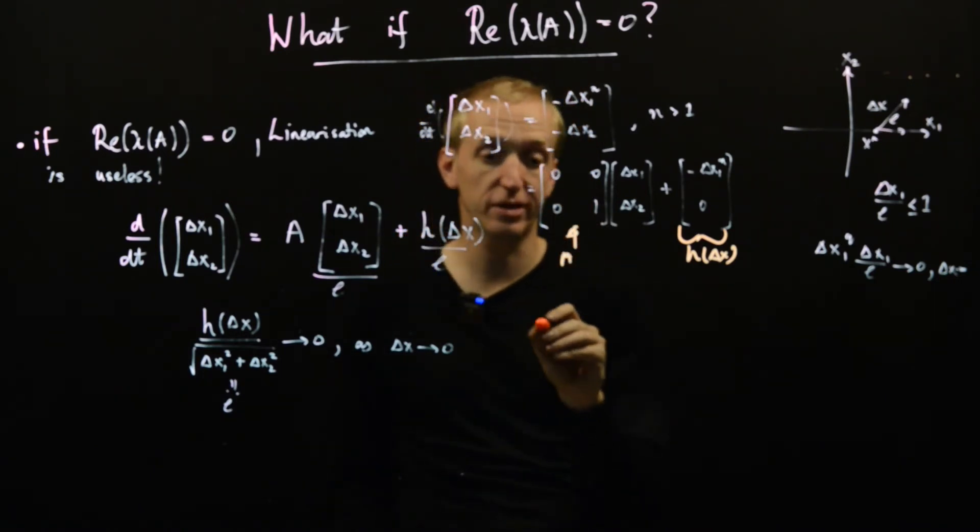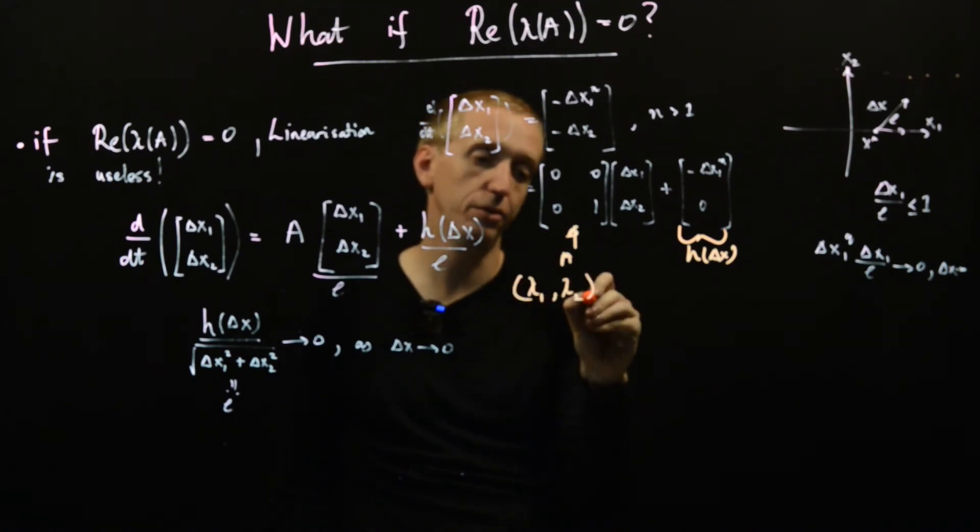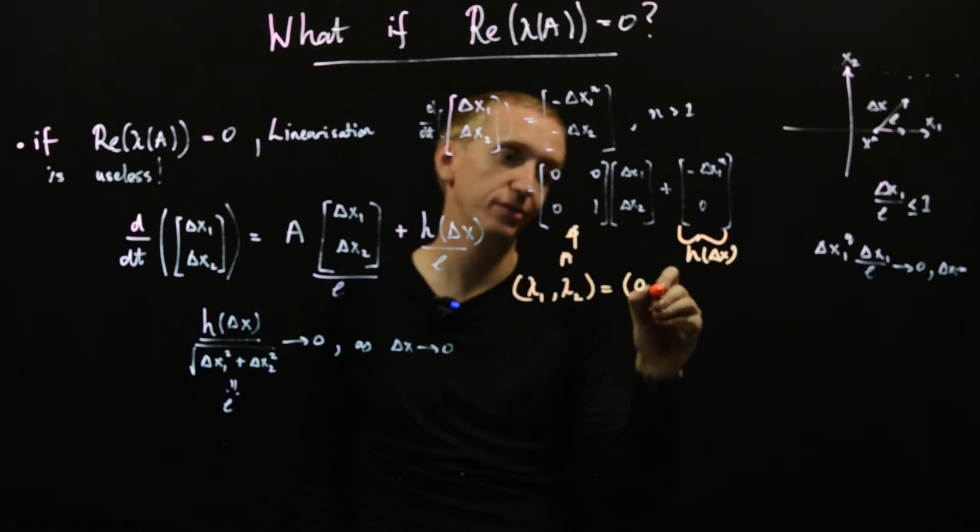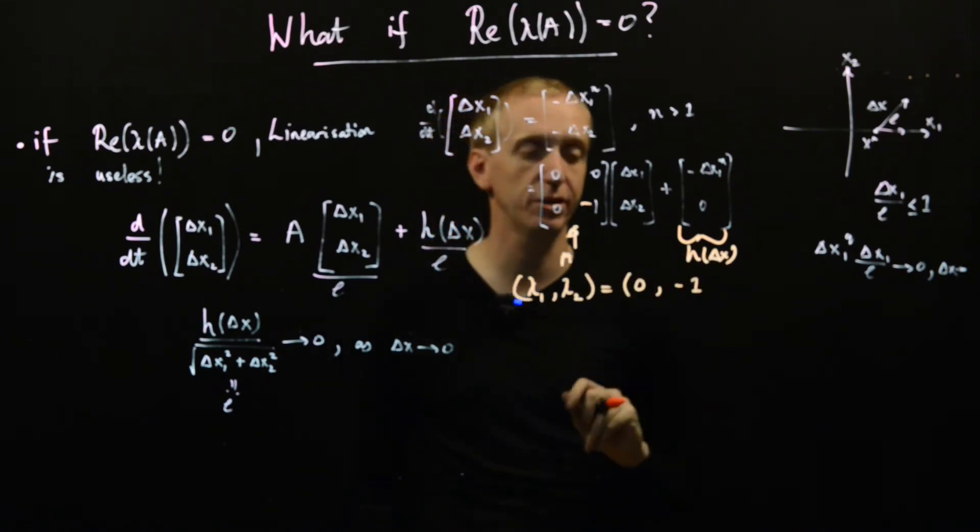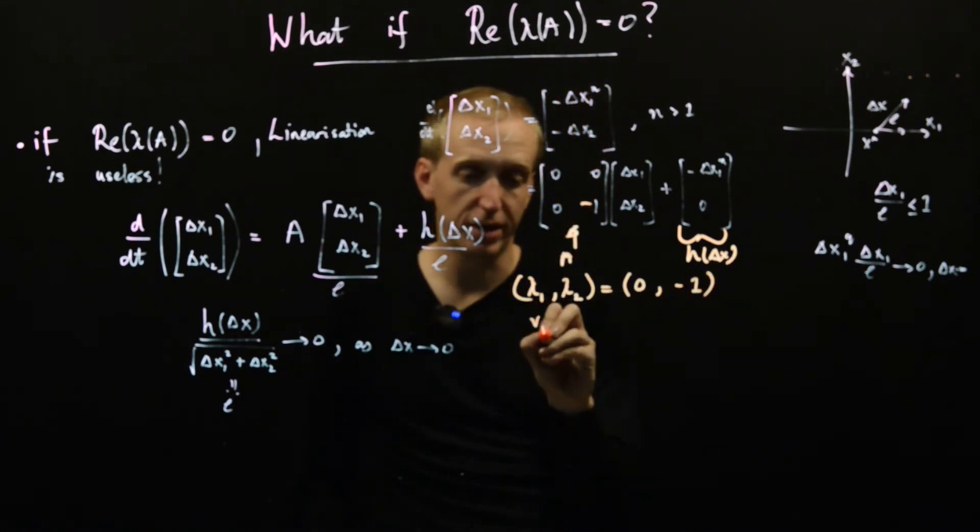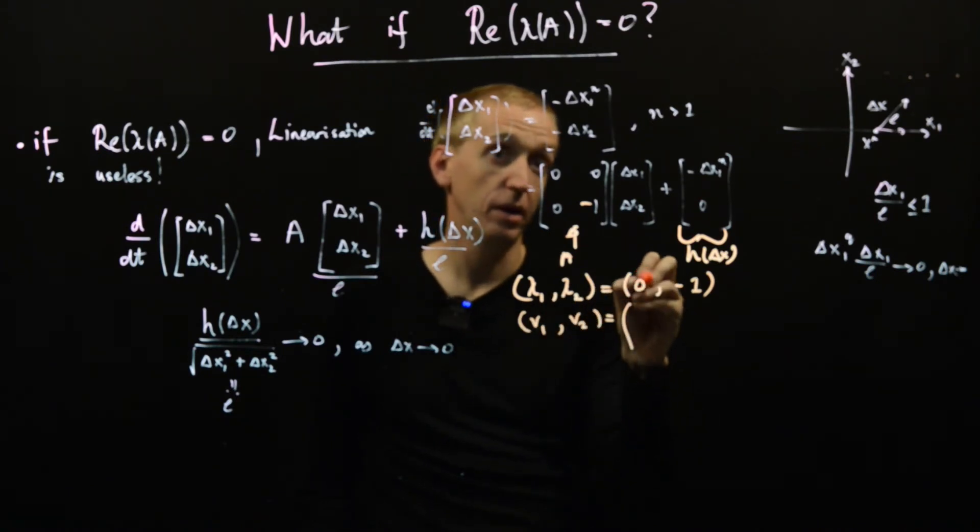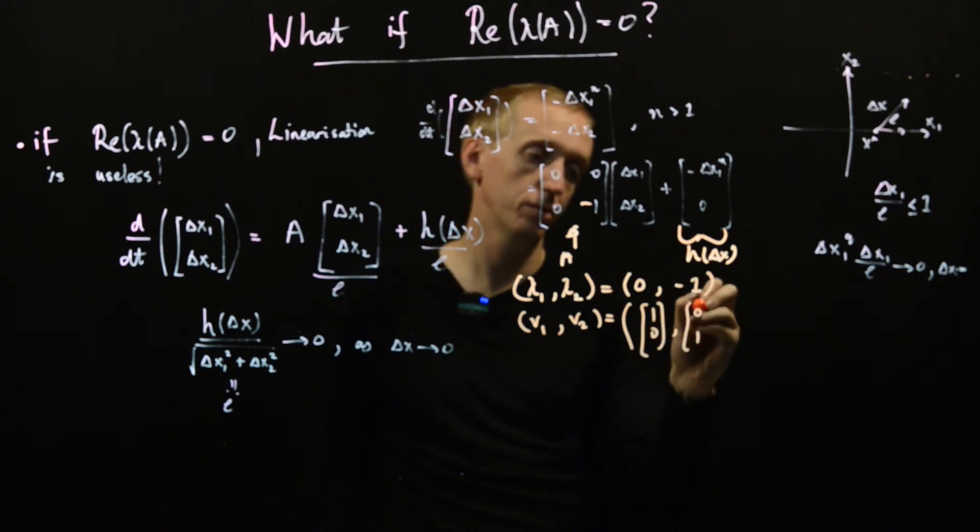And in particular, this A matrix has eigenvalues lambda 1, lambda 2, equal to 0, minus 1, because I did the linearization wrong, with corresponding eigenvectors v1, v2. And this one has eigenvector 1, 0, and 0, 1.